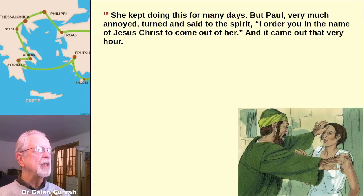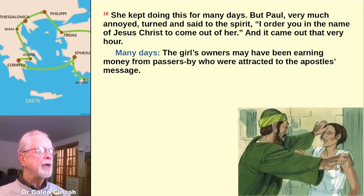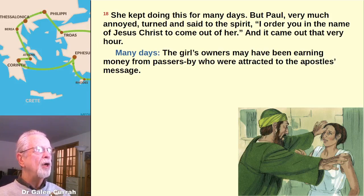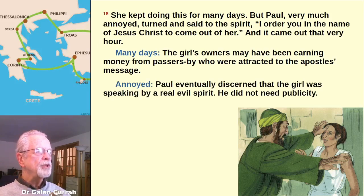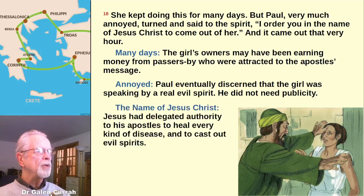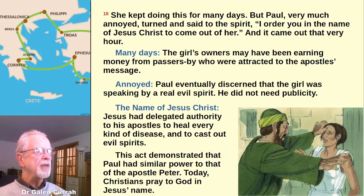Read verse 18 aloud. Apparently they had been going to the place of prayer for many days, and quite often the young woman would follow them shouting the same words. Since she was a slave, the girl's owners may have been earning money from passers-by attracted to the apostles' message. This annoyed Paul, who eventually discerned that the girl was speaking by a real evil spirit — nor did he need any publicity from the devil. So he cast out the spirit in the name of Jesus Christ. Jesus had delegated authority to his apostles to heal every kind of disease and to cast out evil spirits. This act demonstrated that Paul had similar power to that of the apostle Peter. To this day, Christians pray to God in Jesus' name.